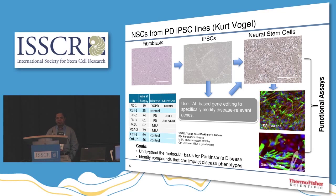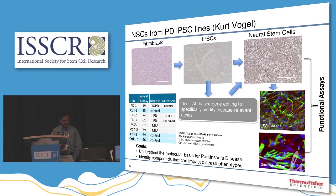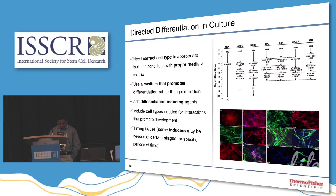Kurt Vogel, who is here, will talk about how we have taken NSCs derived from neural induction media from Parkinson's disease human patient iPSC lines — roughly seven or eight different lines, including some control patients and about four disease patients — and how the neurons can be used for disease modeling, drug discovery, or gene engineering purposes.